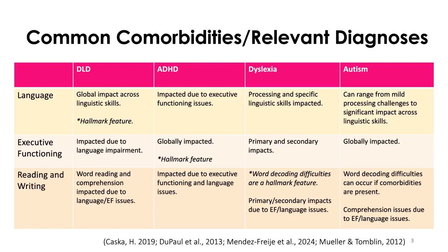Sometimes there are executive functioning issues in addition to DLD — things like the big picture, stating the main idea, visualizing, and self-regulating. But the main thing you want to address in therapy is those language issues. We do want to address executive functioning, but if you don't address the language issues, those executive functioning interventions won't be fully beneficial. Reading and writing are also going to be impacted, because morphology and phonology impact the ability to decode.